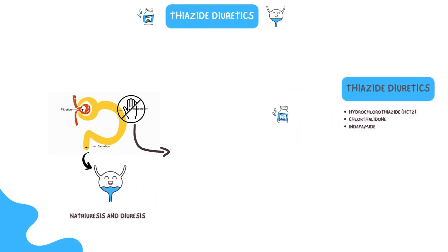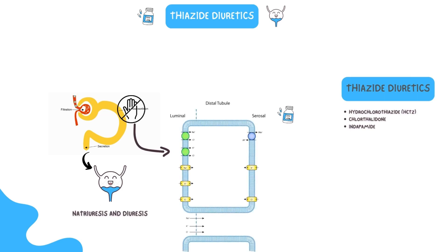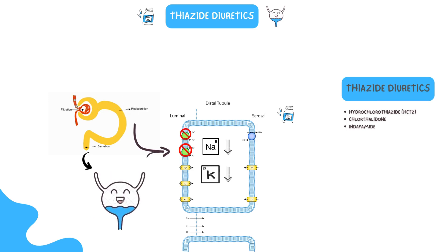Thiazide diuretics work by blocking the sodium chloride channel in the proximal section of the distal convoluted tubule. The sodium-potassium pump's efficiency is diminished when the sodium chloride channel is blocked, and the transport of sodium and water into the interstitium is also decreased, resulting in a whole lot of urine collected in the renal tubules and increased urine output.